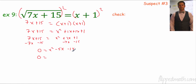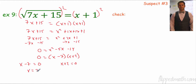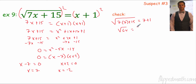That gives 0 equals x squared minus 5x minus 14. I need two numbers that multiply to negative 14 and add to negative 5 — that factors as x minus 7 and x plus 2. By the zero product property: x equals 7 or x equals negative 2. We have two answers, so we need to check both. For x equals 7: 7 times 7 is 49, plus 15 is 64, and the square root of 64 is 8. That equals 8 — it checks out.